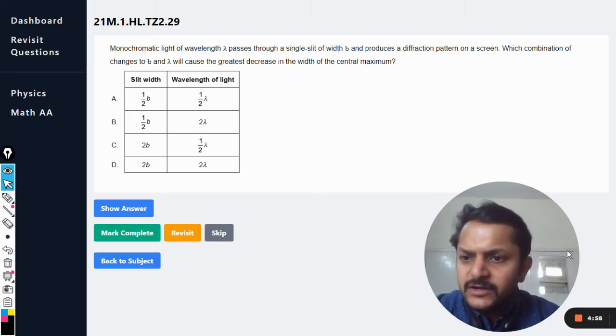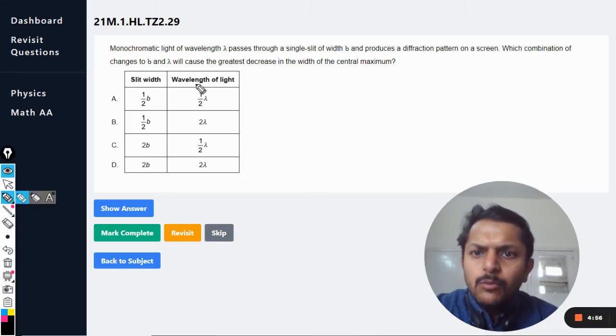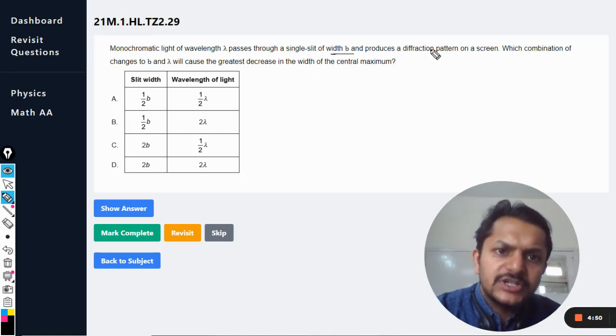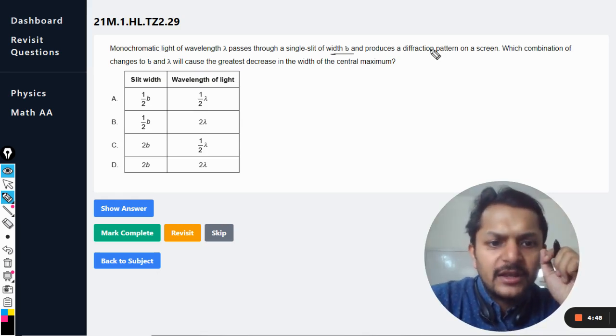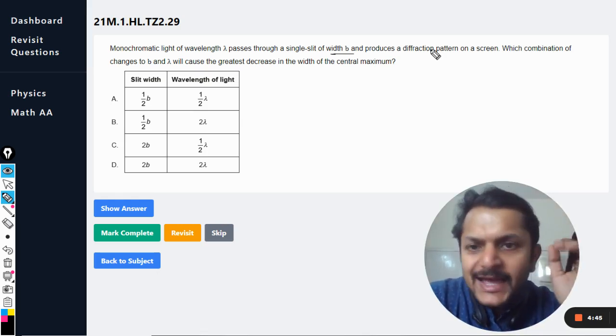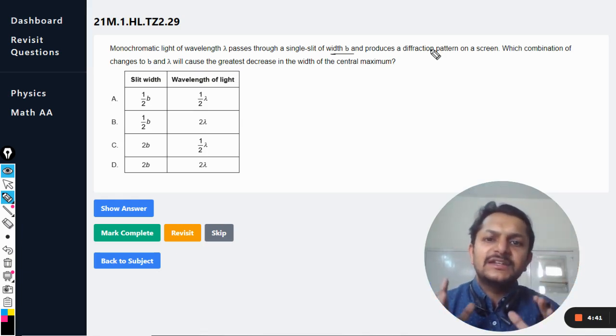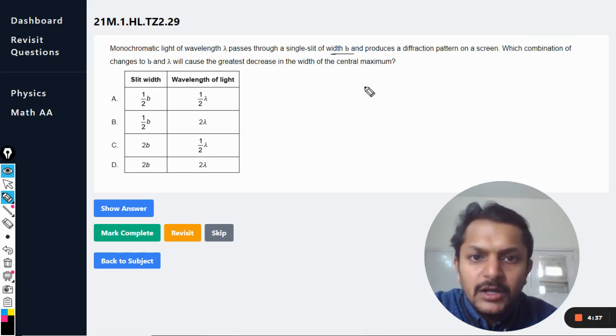Okay dear students, let's see what is in this question. Monochromatic light of wavelength lambda passes through a single slit of width P and produces a diffraction pattern on the screen. Which combination of changes to P and the wavelength lambda will cause the greatest decrease in the width of the central maxima?